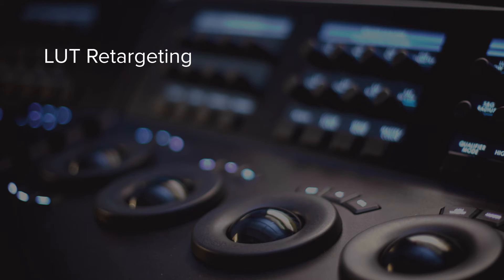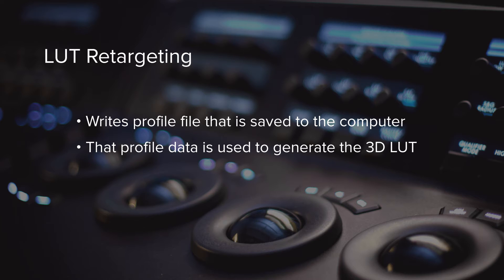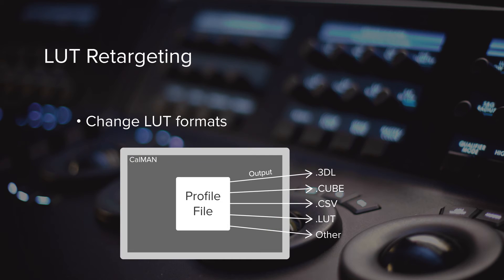The LUT technology writes a profile file saved on your computer containing all measurement data used to create the 3D LUT. With the LUT retargeting feature, you can go back later, use that same profile, and recalculate to a different color space, gamma, white point, or color gamut without redoing the profile. It can also be used to change LUT formats — if you replace a LUT box with a newer or different brand using a different format, the existing measurement data can generate a new LUT for the new device or software without re-measuring the display.